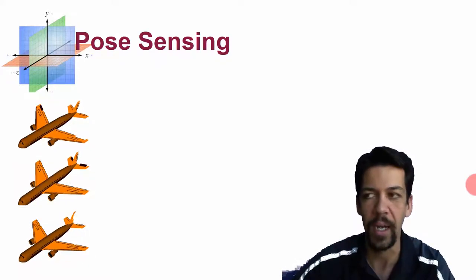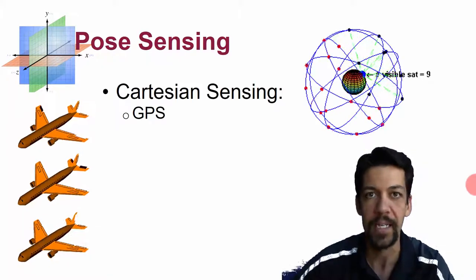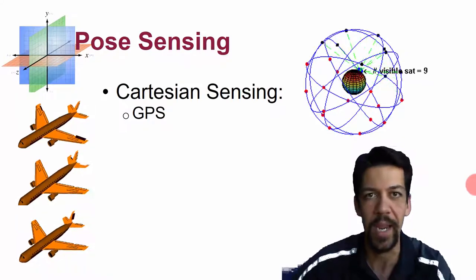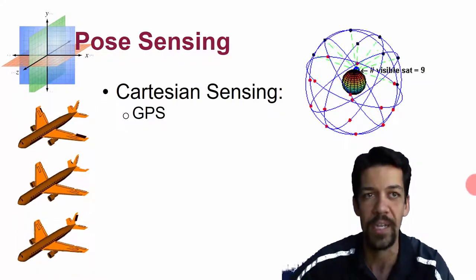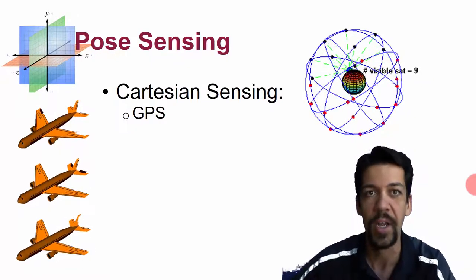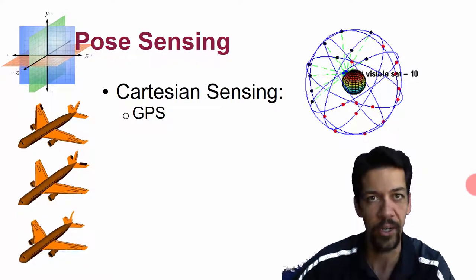We have a couple of options we can take advantage of. First is GPS, the Global Positioning System. It's a satellite-based network that gives us latitude, longitude, and altitude coordinates for any object in Earth's atmosphere. This is great if you're outside.